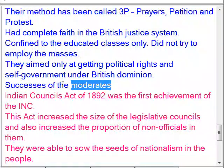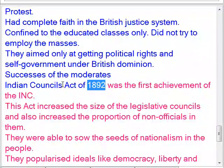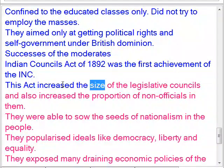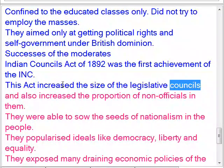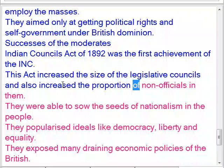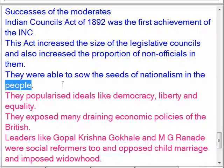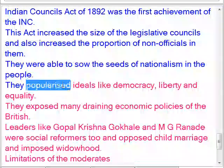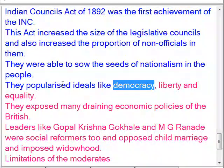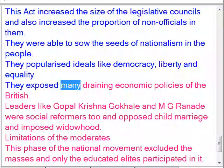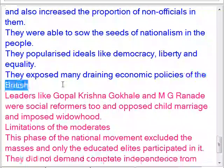Successes of the moderates: the Indian Councils Act of 1892 was the first achievement of the Congress. This act increased the size of the legislative councils and also increased the proportion of non-officials in them. They were able to sow the seeds of nationalism in the people and popularized ideals like democracy, liberty, and equality. They also exposed many draining economic policies of the British.